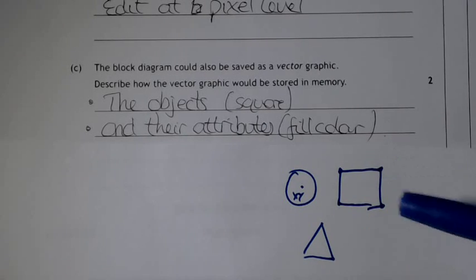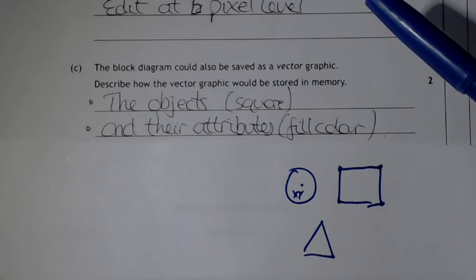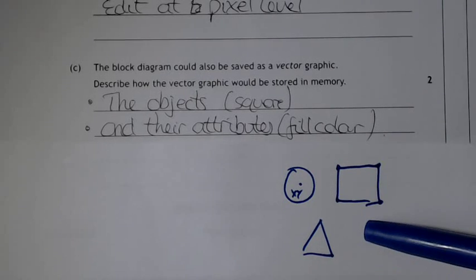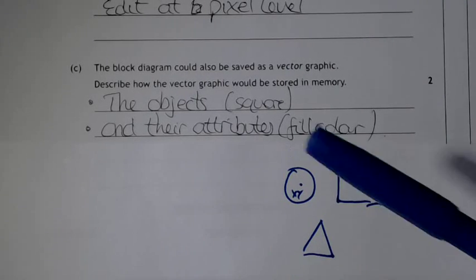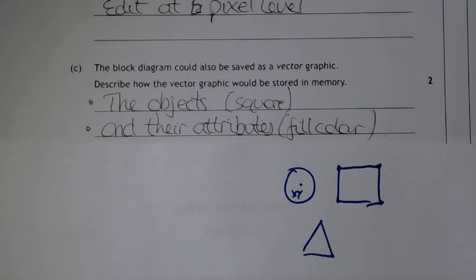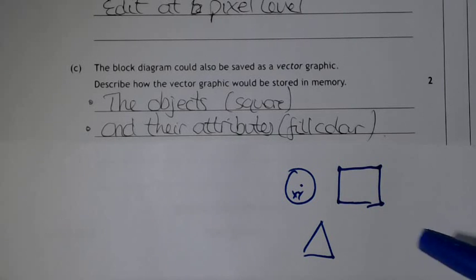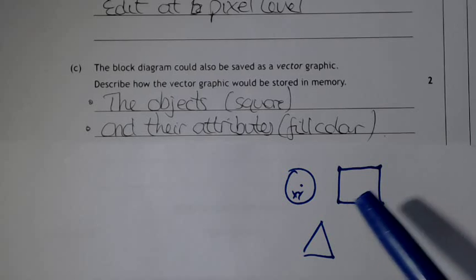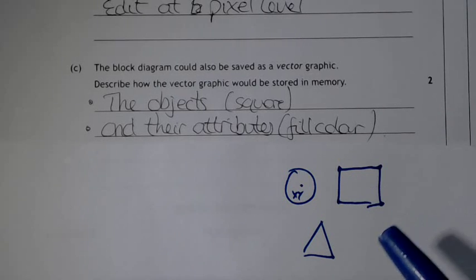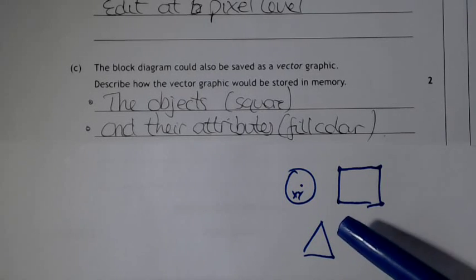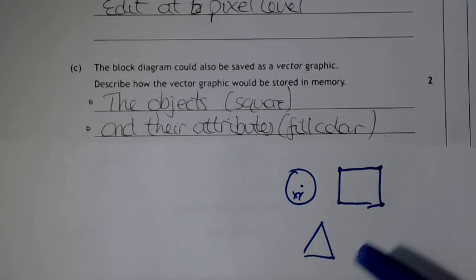So more often than not, it's a smaller file size than a bitmap. The more objects you put into your vector image, then the file size does increase. So the file size does get bigger the more objects you have. But you tell it what objects, and then you tell it all the attributes or the characteristics of that object in order for the computer to recreate it each time it needs to.